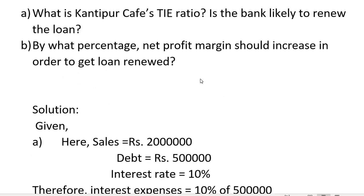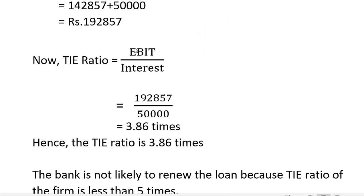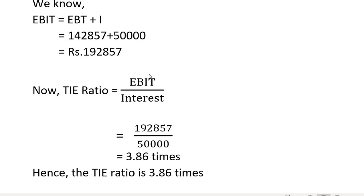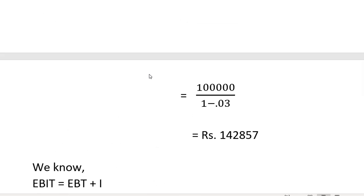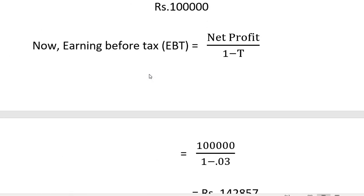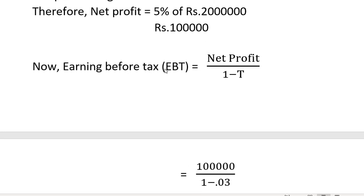Now let us calculate the TIE ratio. The TIE ratio formula is EBIT divided by interest. Net profit is 5% of 2,000,000, which equals 100,000. We need to find EBIT using the TIE ratio formula: EBIT divided by interest.